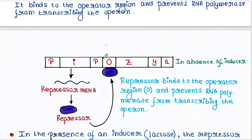Next is another P — another promoter — and here we have the operator. After that, we have three structural genes: Z, Y, and A. This promoter is the promoter of these three genes and regulates their expression. Hence this is an operon — these three genes are under the control of a single promoter.